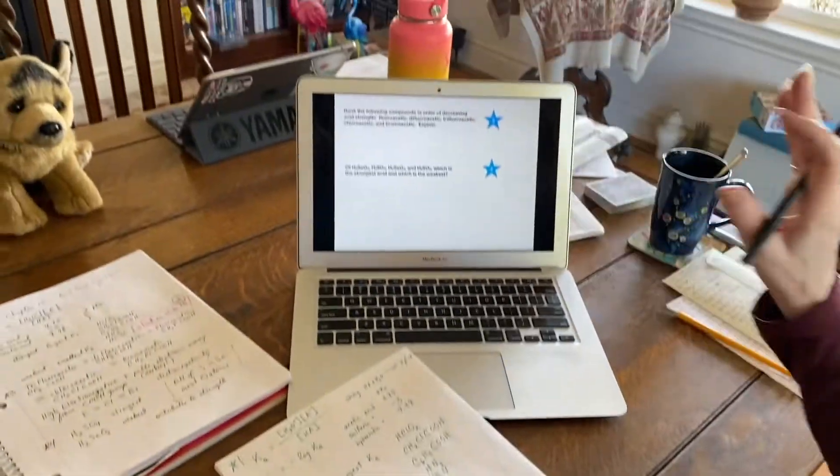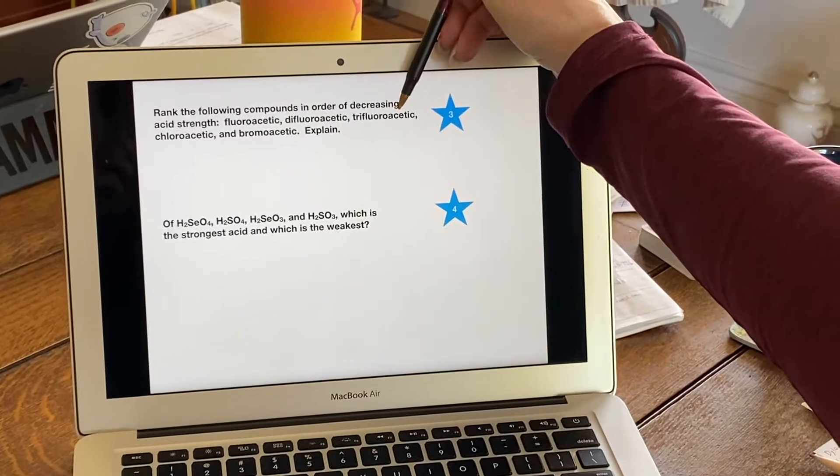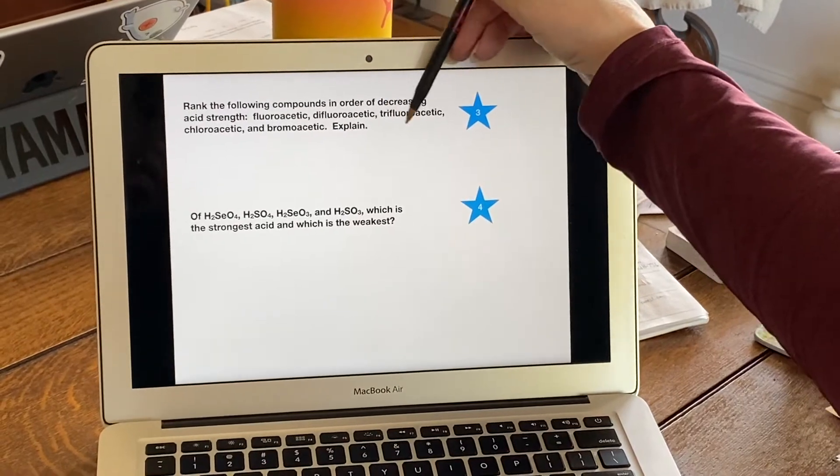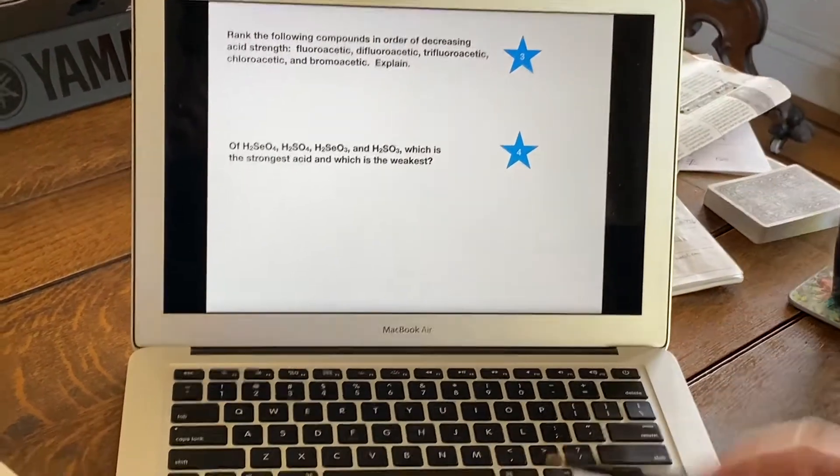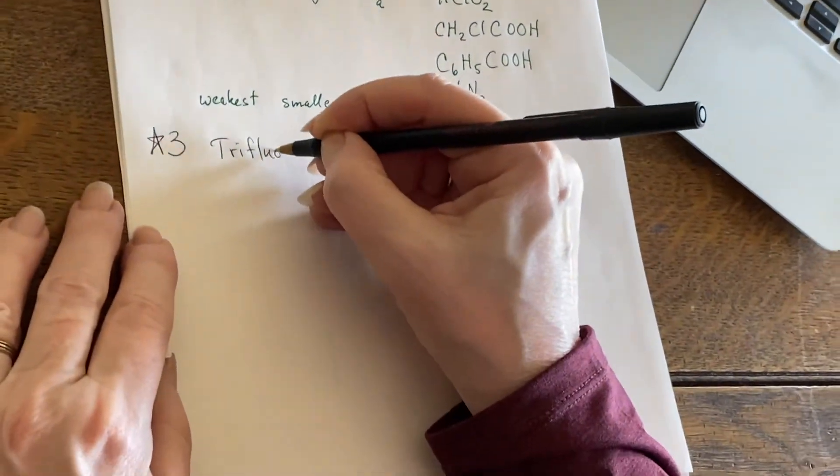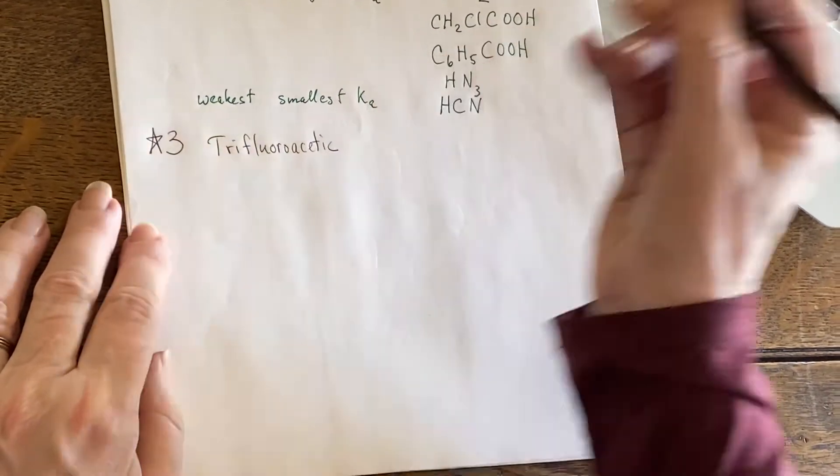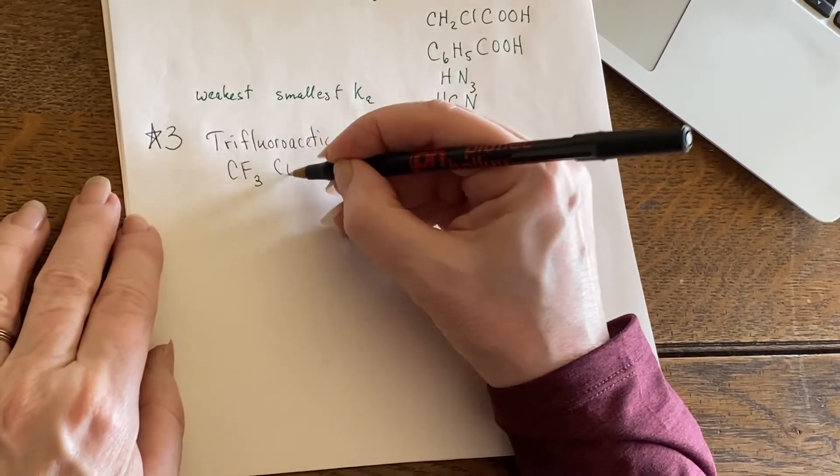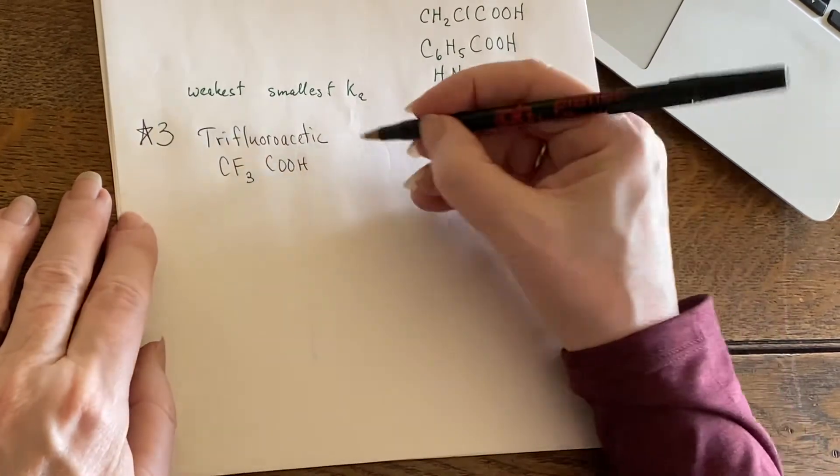So they're talking about decreasing acid strength. I need to grab first of all the most electronegative situation that's away from that hydrogen that's trying to escape. So this trifluoroacetic acid should be the answer to our question as being the strongest, because it has these fluorines all pulling electron density away from that hydrogen.